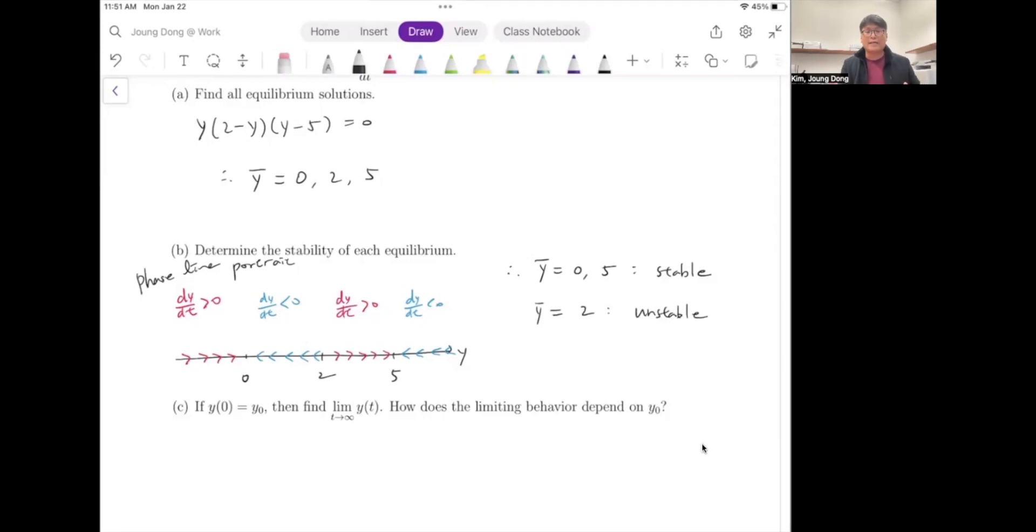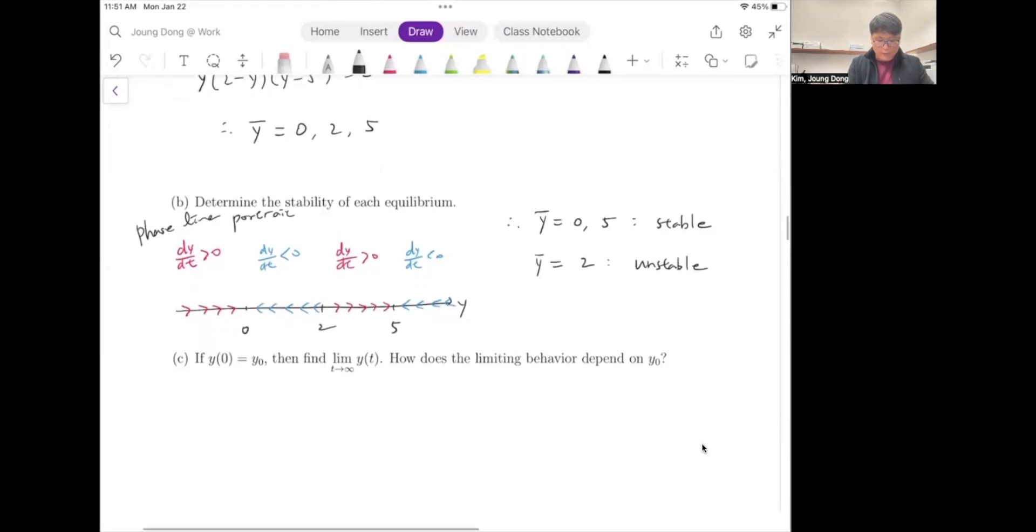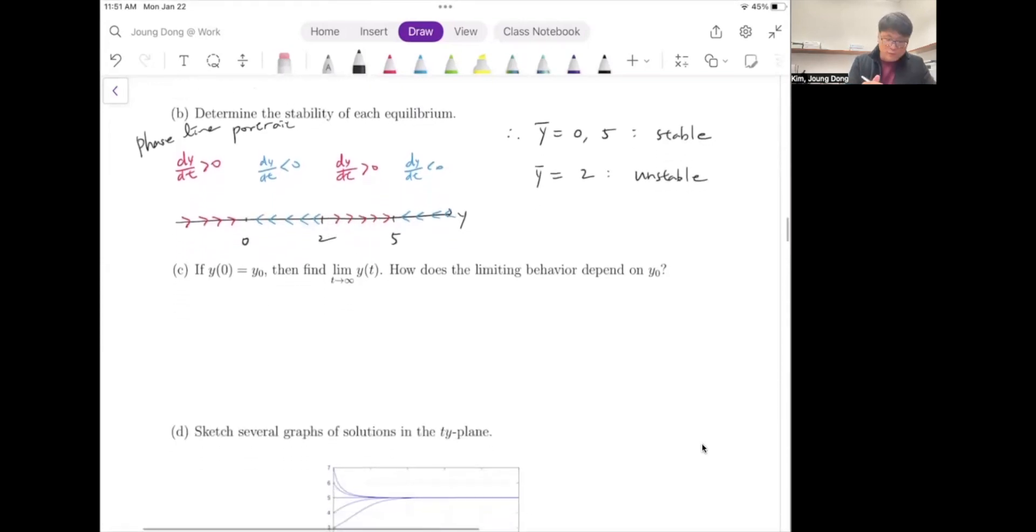So as we did in the previous problem, let's do the analysis of this. We have to do all the cases. The first word, we're going to start from your initial value is less than 0. Any number less than 0 has the same movement. It is going up and getting close to 0. So we can conclude like whenever your y is less than 0, it goes to 0. What about at 0? It is equilibrium, which means there's no change, dy/dt equals 0. So it is still 0.